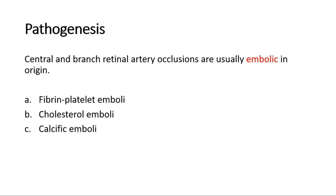The pathogenesis of central retinal artery occlusion is usually due to embolus. There are three types: fibrin platelet emboli, commonly dislodged from diseased carotid arteries; cholesterol emboli, also commonly from diseased carotid arteries; and calcific emboli, which are usually dislodged from heart valves where there is calcification.